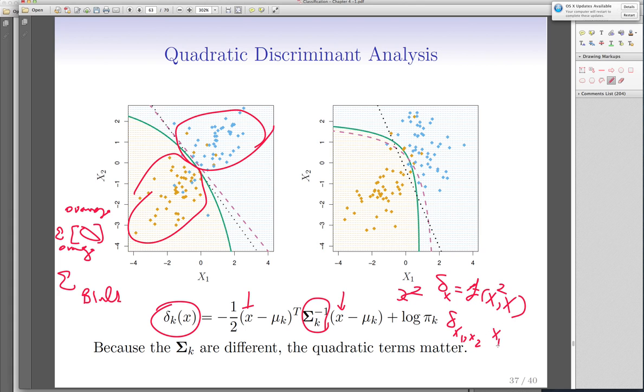So, by assuming that you allow this sigma k be there, which is different covariance matrices for each group, then you let the boundary become nonlinear. So, here, you can see what was the linear discriminant boundary for same simulation, and that would be linear.